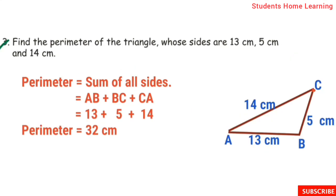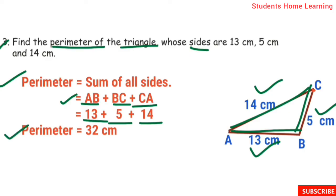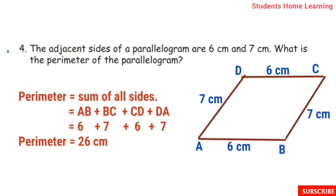Third sum: find the perimeter of the triangle whose sides are 13 cm, 5 cm, and 14 cm. Perimeter is equal to sum of all sides: AB plus BC plus CA equals 13 plus 5 plus 14, which gives 32 cm. Perimeter is equal to 32 cm.